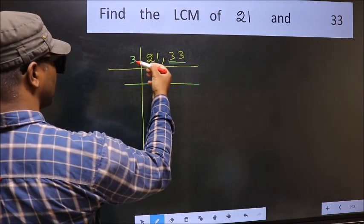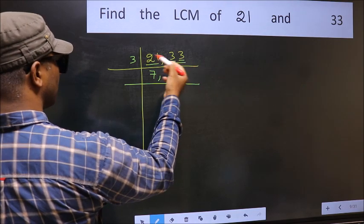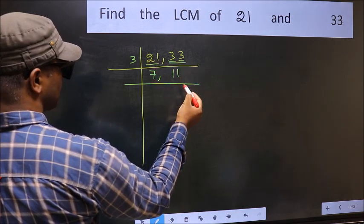First number 3. When do we get 3 in the 3 table? 3 ones is 3. The other number 3. When do we get 3 in the 3 table? 3 ones is 3.